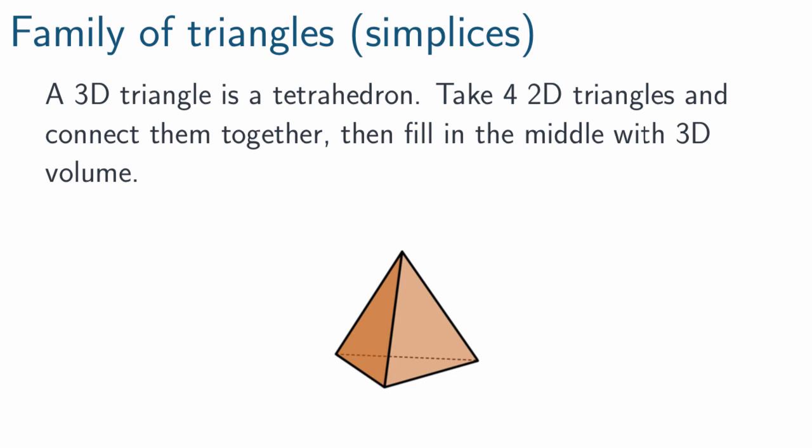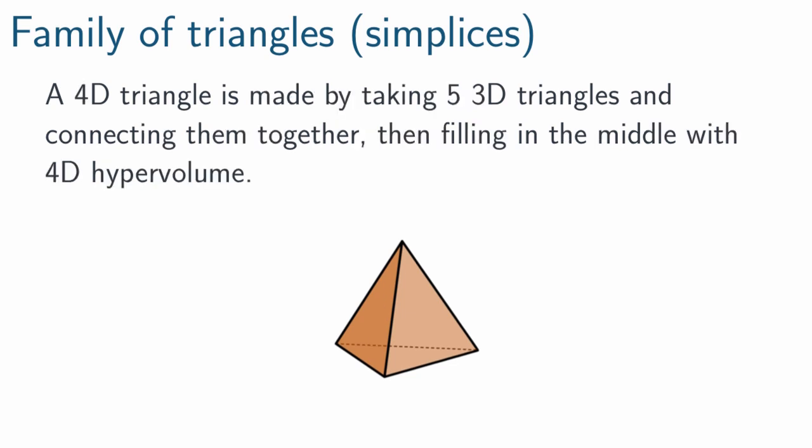So a 2D triangle is made out of three 1D triangles. A 3D triangle is made out of four 2D triangles. A 4D triangle is made out of five 3D triangles. This pattern continues on, by the way.